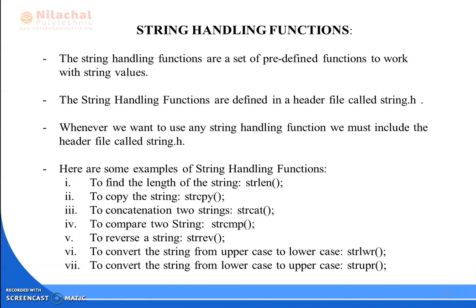If we want to copy any string from one location to another location — basically referred to as source and destination — if we want to copy the string from a source place to a destination place, we can use the function strcpy. Next, in order to concatenate two strings, we have the function strcat. Concatenation is a string followed by another string. For example, if we have a string x and a string y, after concatenating them, string y will follow string x, and for that we have the function strcat.